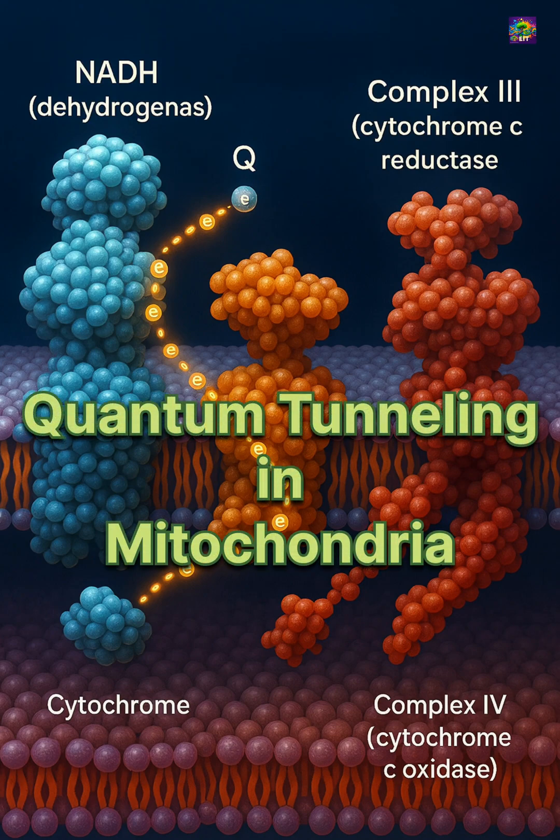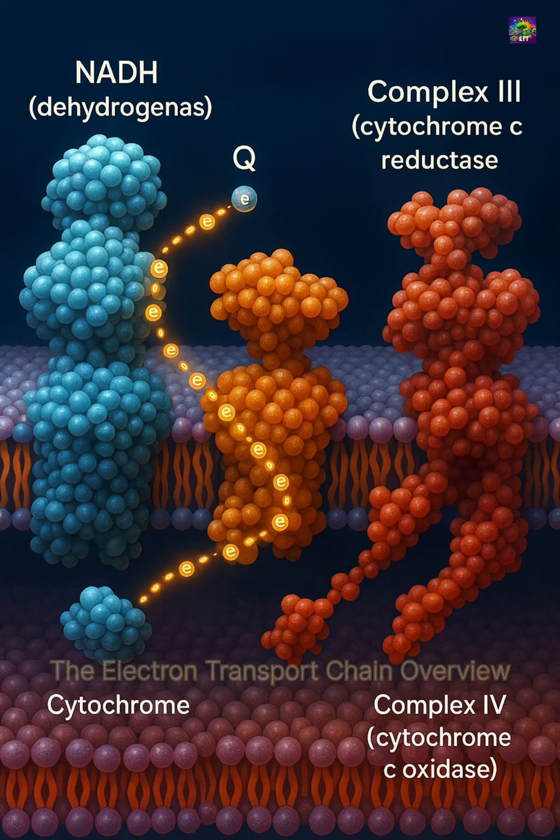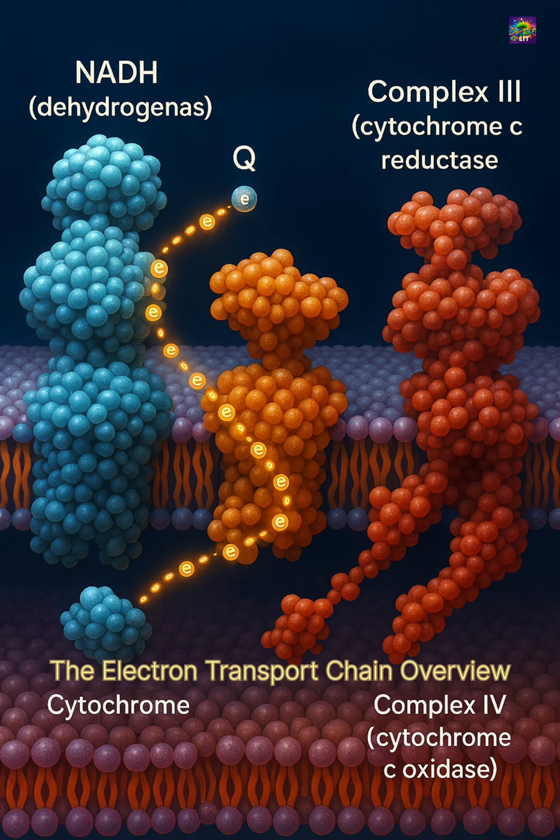Mitochondria produce most of the energy our cells use, and they do this by moving electrons through a chain of proteins.